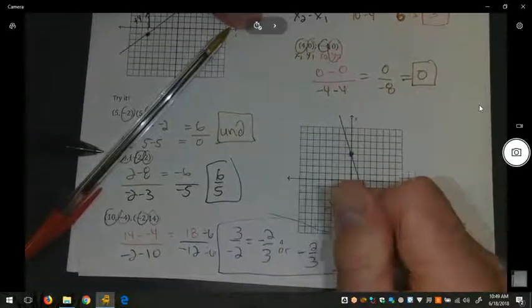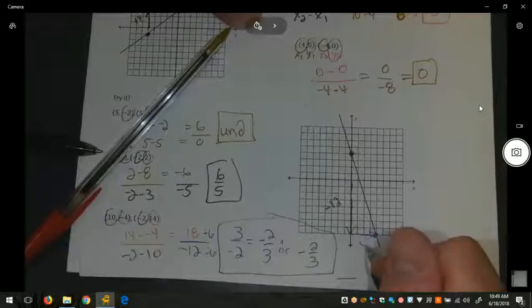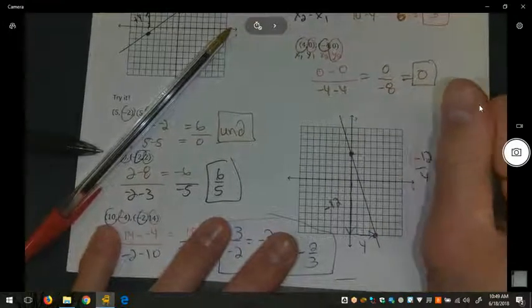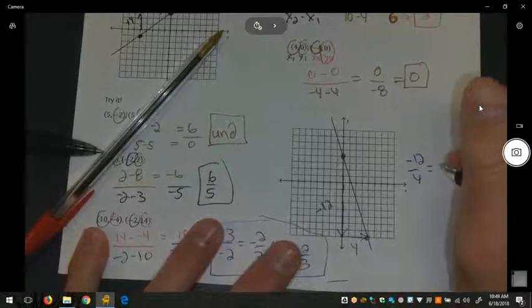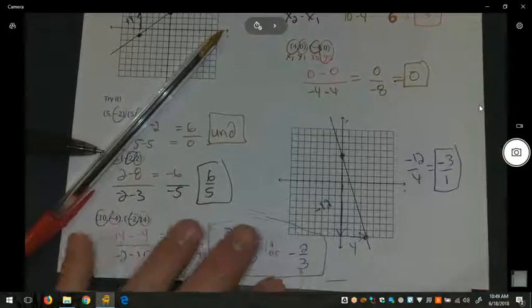Well, that's a slope of negative twelve over four, which both are divisible by four, giving us negative three over one, or just negative three for the slope. Let's see if that is consistent.